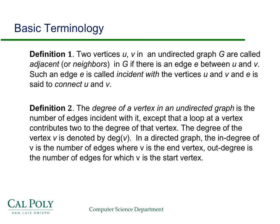So here's just some basic terminology. An edge is called incident to the two vertices that make up its endpoints, and E is said to connect U and V. Two vertices with an edge between them are called adjacent, or neighbors to each other. The degree of a vertex in an undirected graph is the number of edges incident to it. Except if you have loops, then it contributes 2 to the degree of that vertex.